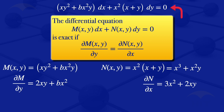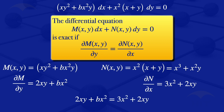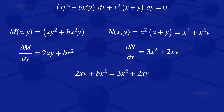For this equation to be exact, we require that ∂M/∂y = ∂N/∂x. So I will equate the two partial derivatives, and the result is: 2xy + bx² = 3x² + 2xy.